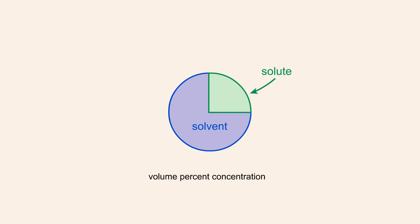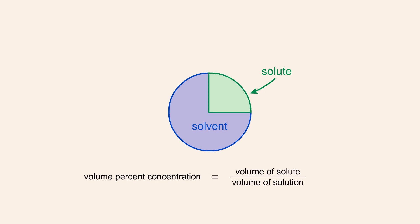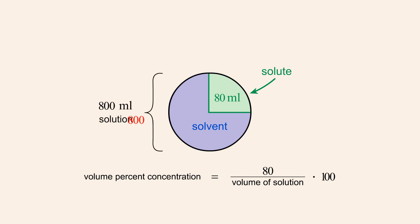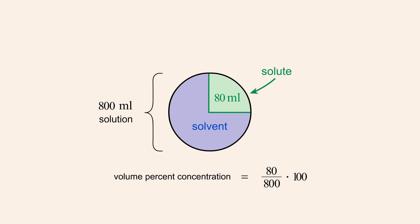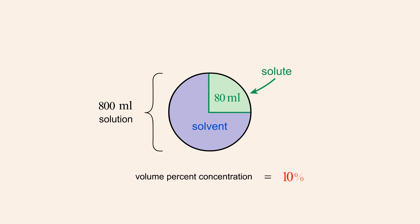The volume percent concentration of a solution is calculated by dividing the volume of solute by the total volume of the solution and then multiplying this fraction by one hundred to get a percentage. For example, if the volume of solute is eighty milliliters and the total volume of the solution made up of solvent plus solute is eight hundred milliliters, then the fraction of the solution which is solute is eighty over eight hundred or one-tenth. Multiplying this fraction times one hundred, we get a volume percent concentration of solute of ten percent.